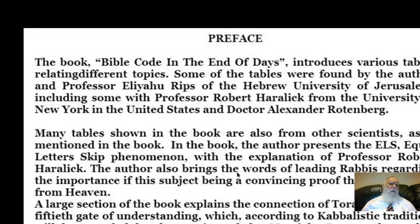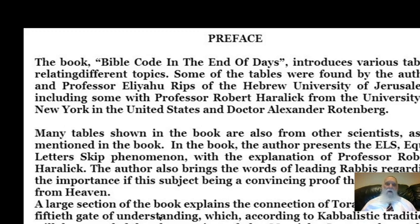They also bring the words of leading rabbis regarding the importance of this subject, being a convincing proof that the Torah is from Heaven. A large section of the book explains the connection of Torah codes to the 15 Gates of Understanding, which according to Kabbalistic tradition will be revealed by the coming of the Messiah. They also elaborate on the connection of the Torah codes and the hidden light.